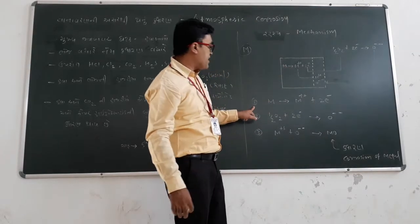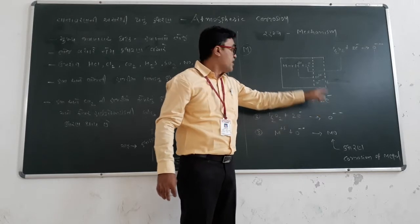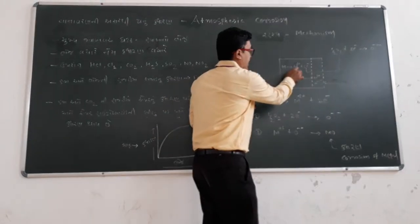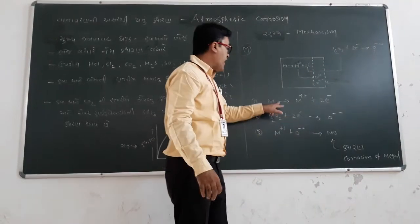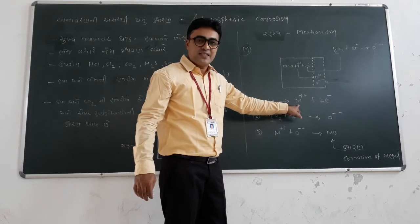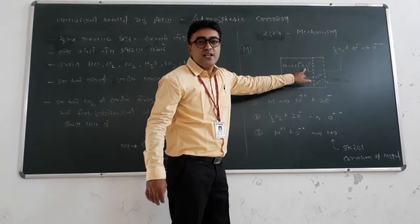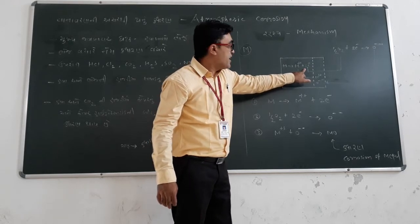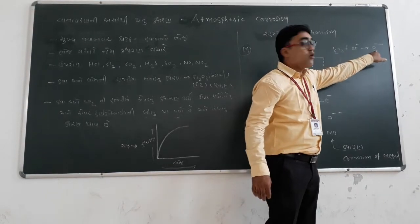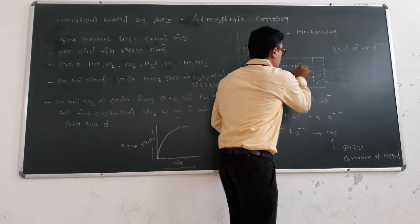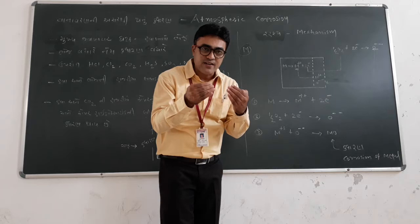M stands for any general metal. This is an oxidation reaction. M gives M++ plus 2 electrons. The electrons are attracted to O2. O2 plus 2 electrons gives O2-. Now M++ and O2-, positive and negative ions, get attracted.